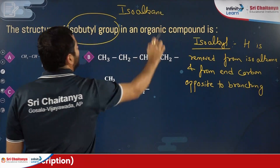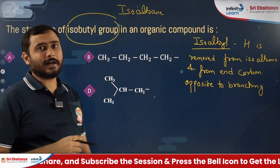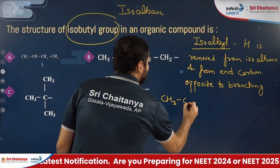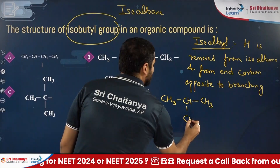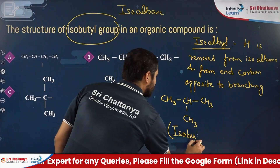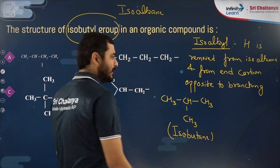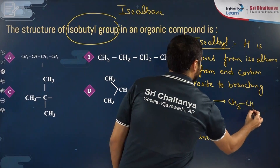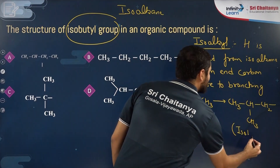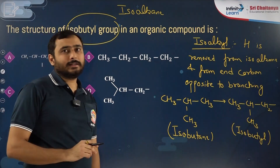For an iso alkane, n−1 carbon atoms are arranged in a straight chain and one methyl branching is present at the second position. Butane has four carbon atoms, so three carbons in straight chain with one methyl at second position gives isobutane. Removing one hydrogen from the end carbon opposite to the branching gives CH3-CH(CH3)-CH2-, the structure of isobutyl.